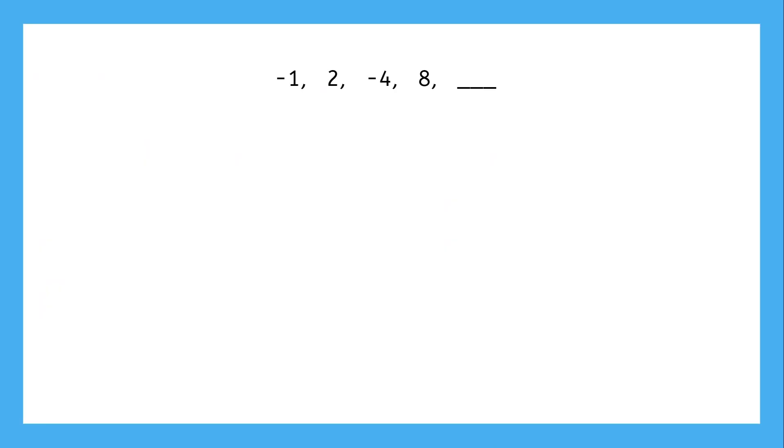Here's a sequence, but something's weird about it. The numbers keep alternating signs: negative, positive, negative, positive. Are we sure this is even a geometric sequence?